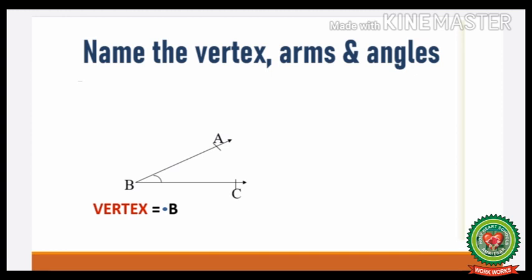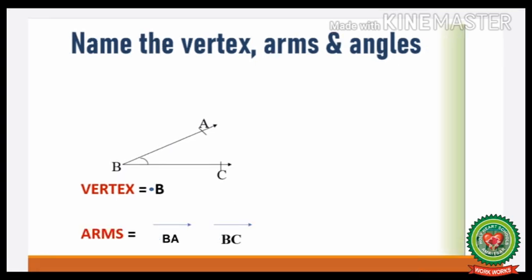Now let us identify the arms of the figure. Arms means the two rays. So which are the two rays in this figure? That is arm BA and arm BC.